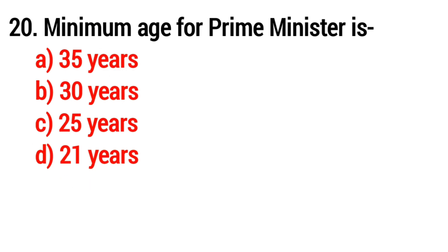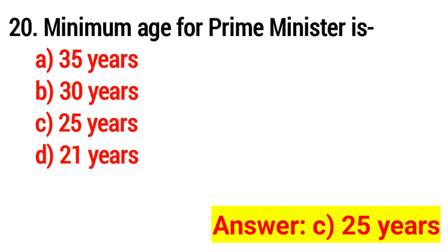Question 20: The minimum age for a Prime Minister is what? The answer is Option C, 25 years.